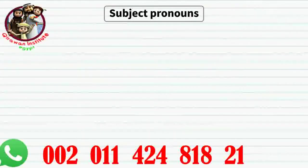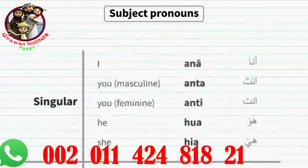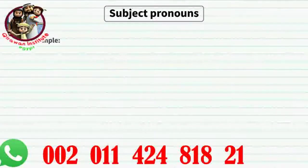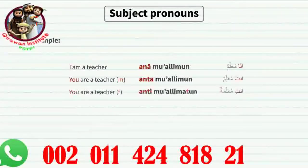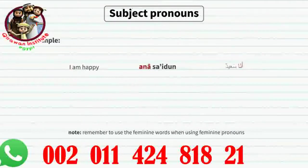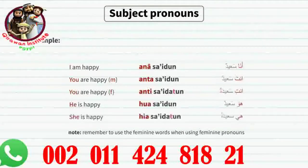Pronouns — subject pronouns. We will focus on singular subject pronouns: ana (I), anta (you, masculine), anti (you, feminine), huwa (he), hiya (she). Some examples: ana muallimun (I am a teacher), anta muallimun (you are a teacher, m.), anti muallimatun (you are a teacher, f.), huwa muallimun (he is a teacher), hiya muallimatun (she is a teacher). Also: ana sa'idun, anta sa'idun, anti sa'idatun, huwa sa'idun, hiya sa'idatun.